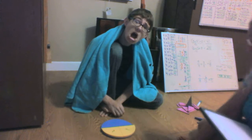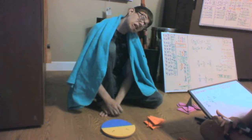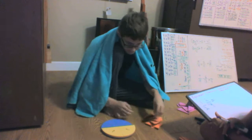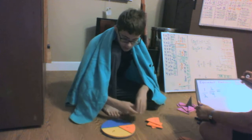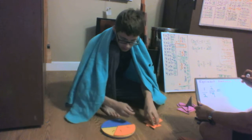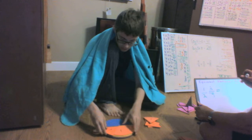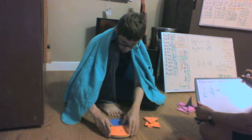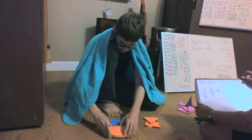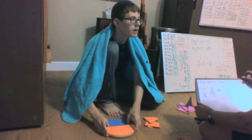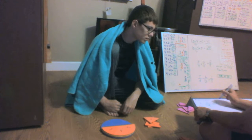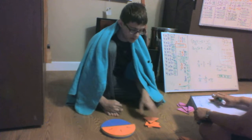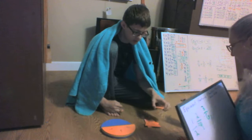Next is our one-sixth. Can the sixth be equivalent to a half? And if so, how many? There's one-sixth, there's two-sixths. Can the sixth be equivalent to one-half? Yes. How many? Three. Three what? Three-sixths. Three-sixths. Give me your sixth and we'll go on to the next one.